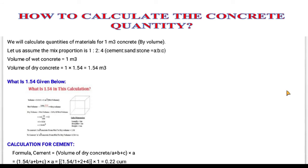Welcome to the Quantity Survey course. Today our lecture is on the quantity of concrete — calculation of quantity of concrete. We will calculate quantities of material for one cubic meter of concrete by volume. Let us assume the mix proportion is 1:2:4, which is M15 grade of concrete, where cement, sand, and stone aggregate are in ratio a:b:c, and the volume of wet concrete is 1 cubic meter.